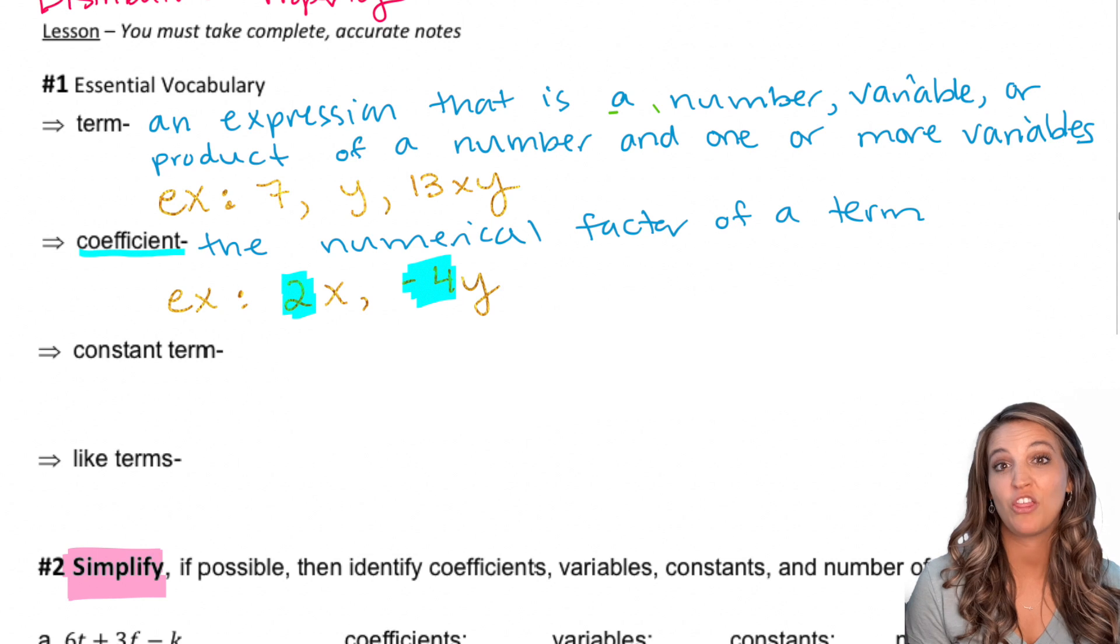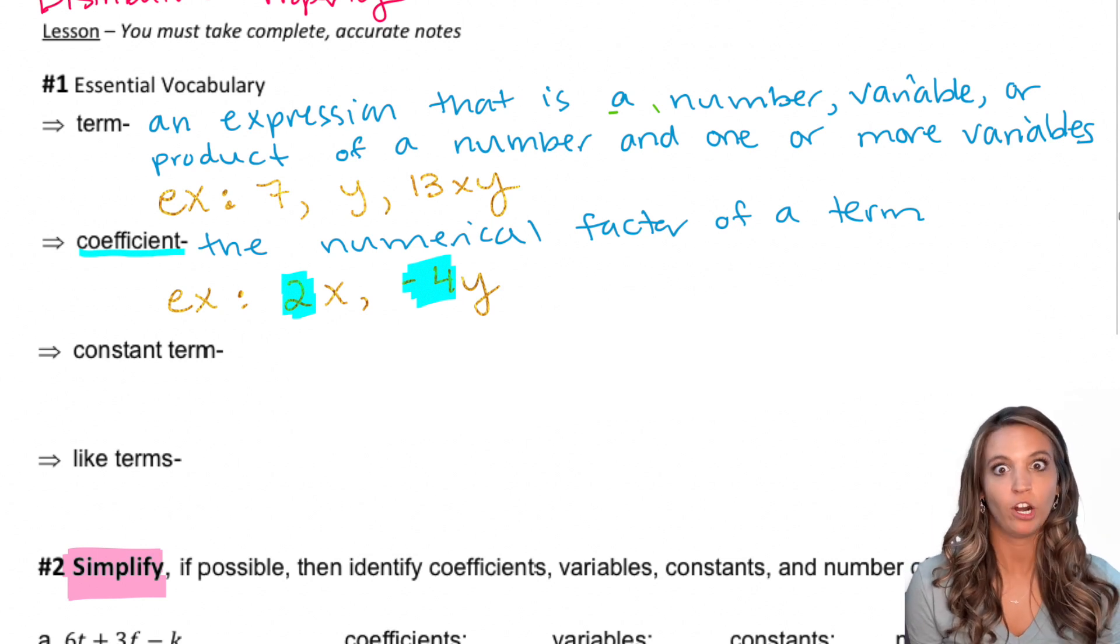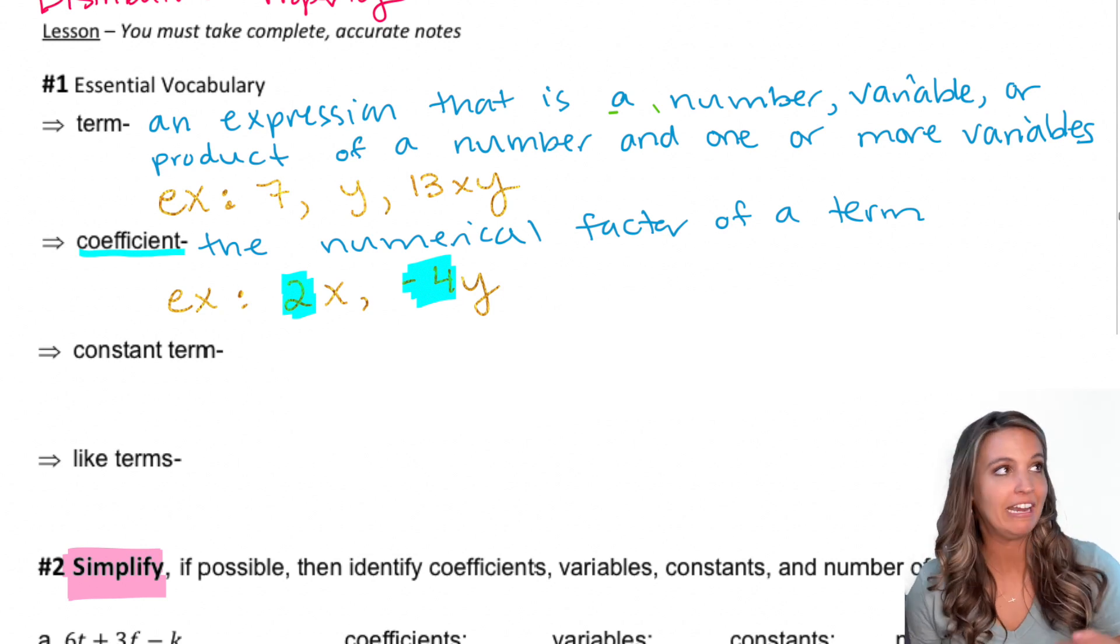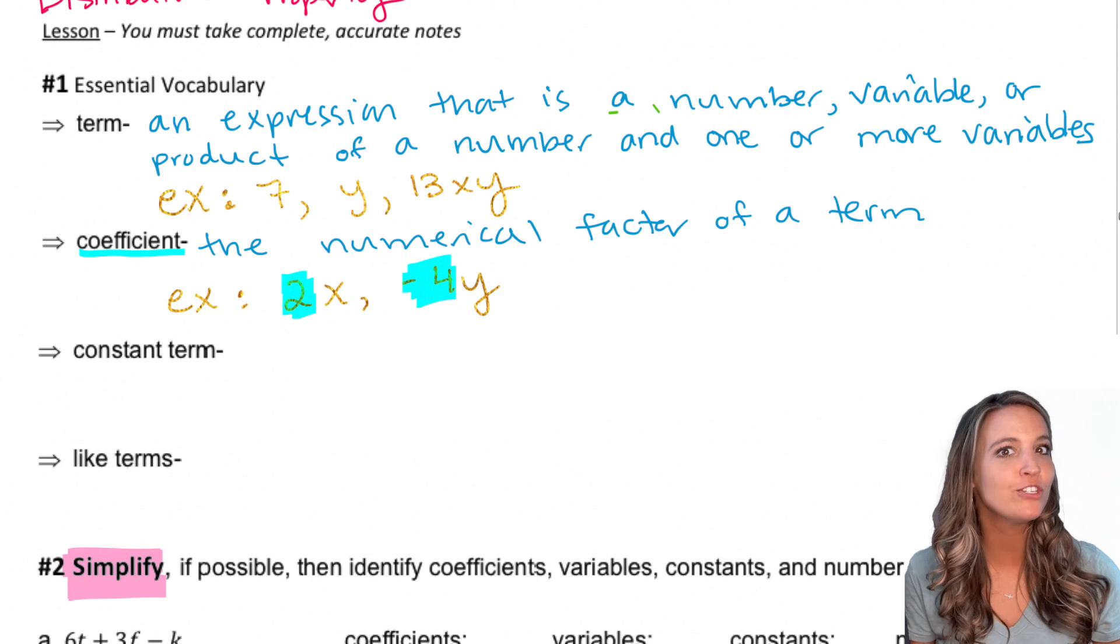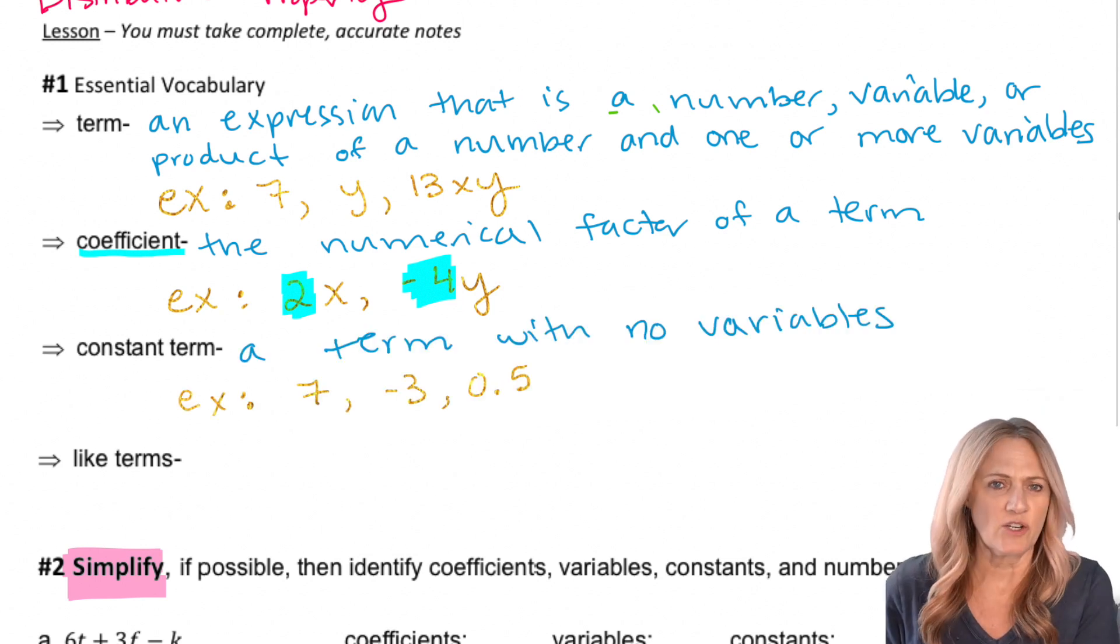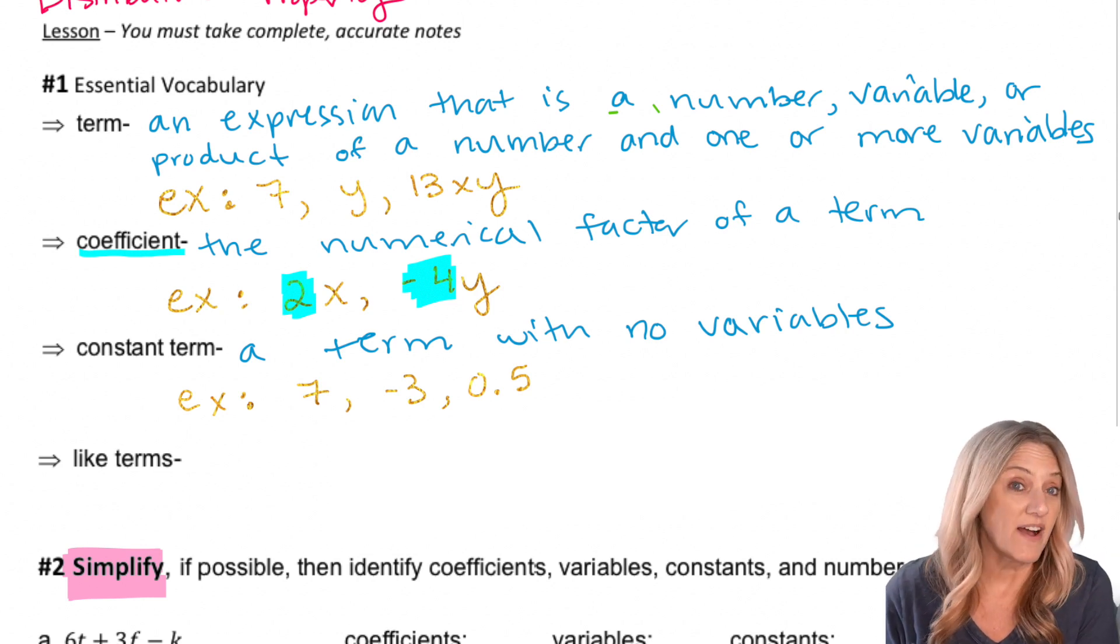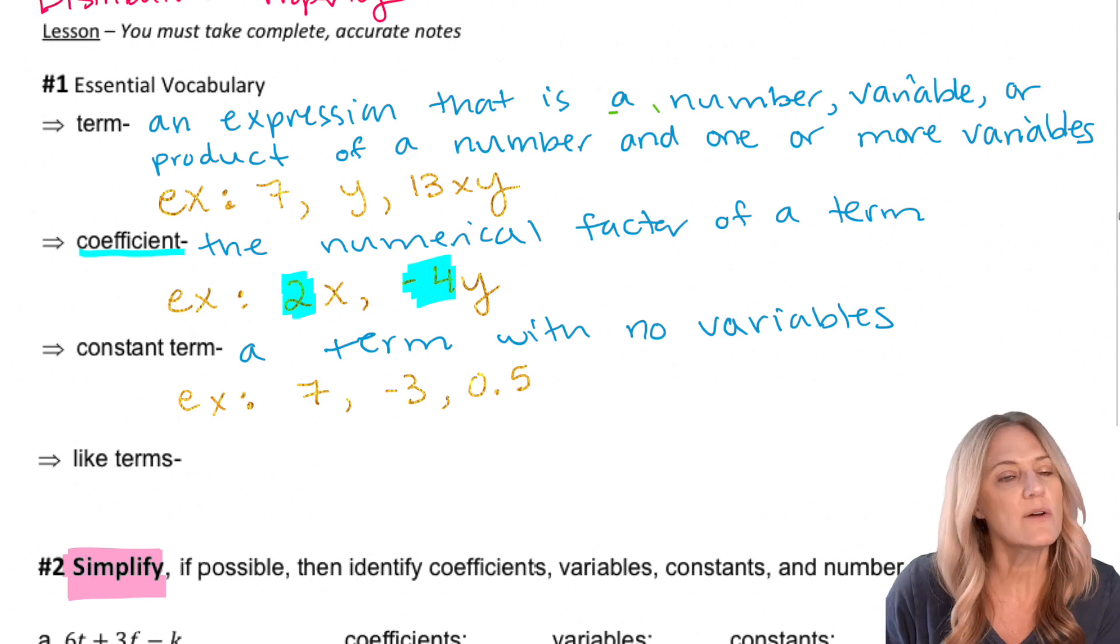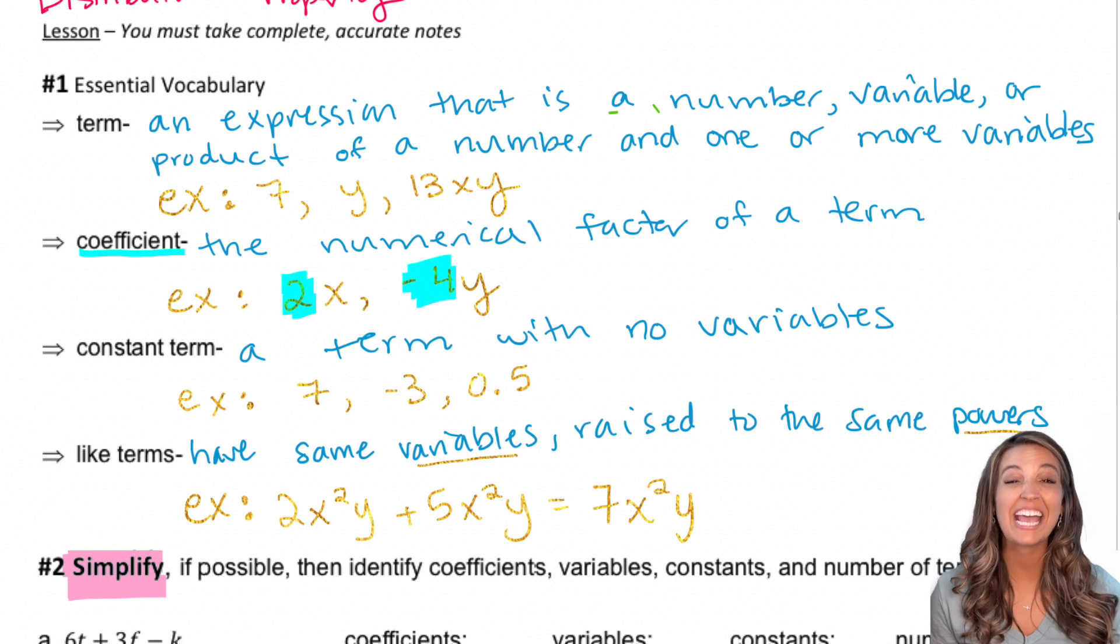Coefficient: the numerical factor of a term. So in our examples of 2x and negative 4y, 2 or negative 4 would be our coefficients. A constant term is a term without a variable, for example 7, negative 3, 0.5.